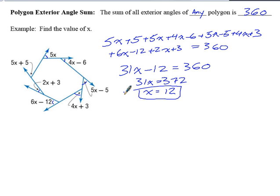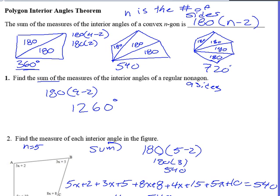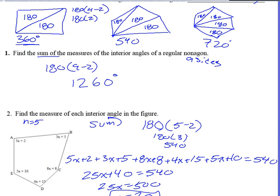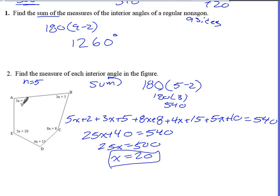So then, if we were finding each individual angle, we would substitute 12 back in, which is actually something I probably should have done here. Back in this problem, if I substitute 20 back into these problems, I would find each angle.